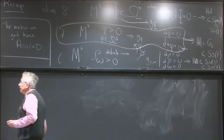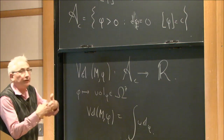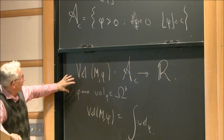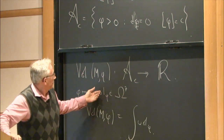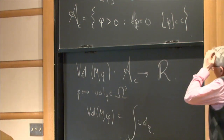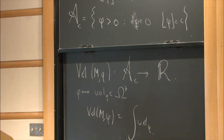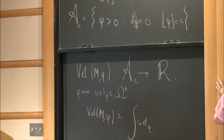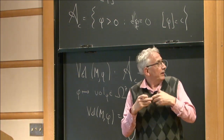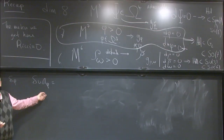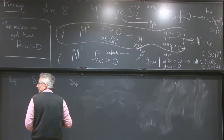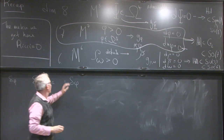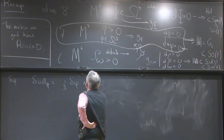This is quite easy to see. Going back to the finite-dimensional algebra, the map that takes a positive 3-form to this volume form — we can differentiate that, and if we have an infinitesimal variation delta phi, the variation of vol_phi has to be written as the wedge product of delta phi with something — and what else could that something be than star_phi of phi? So, up to a factor — I think it's one-third — that has to be the formula.